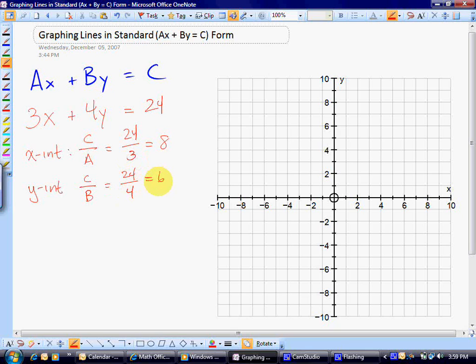We can also get the slope, although it's not necessary for graphing a line. The slope is negative a over b, which is negative 3 over 4.